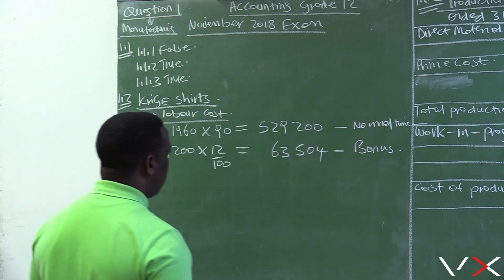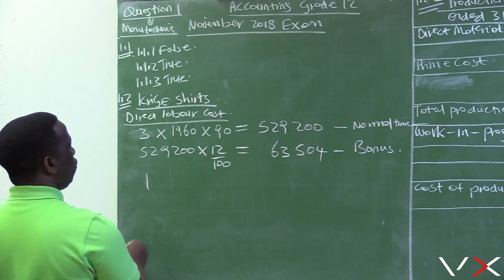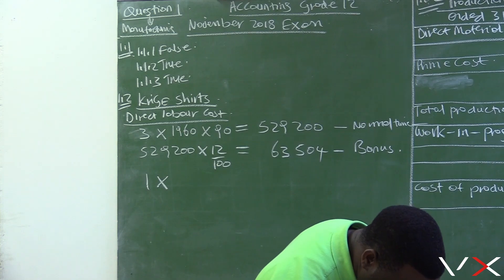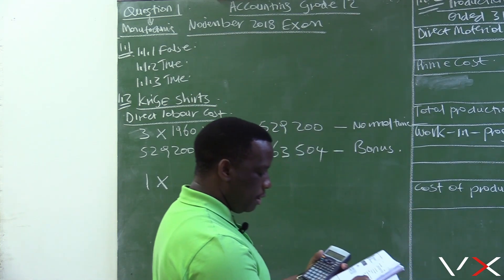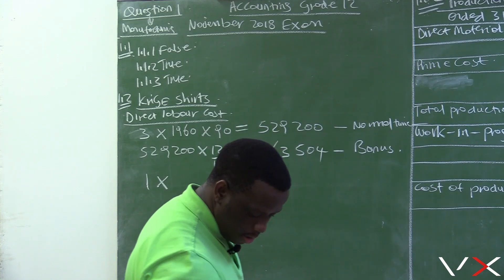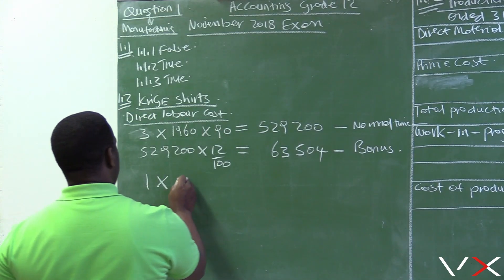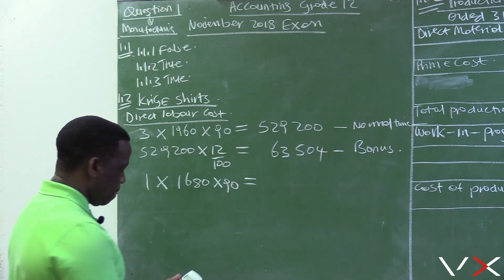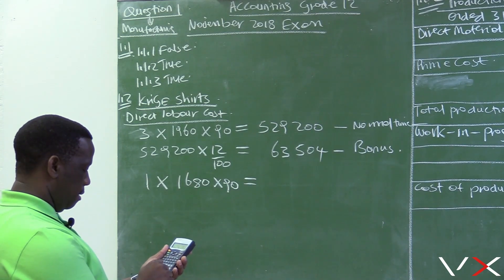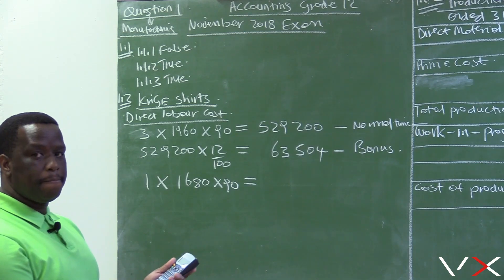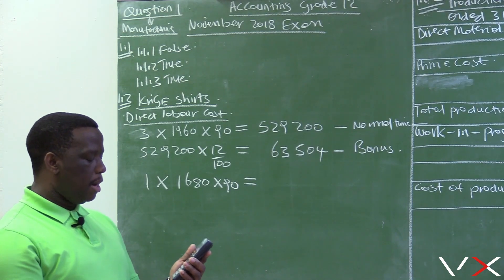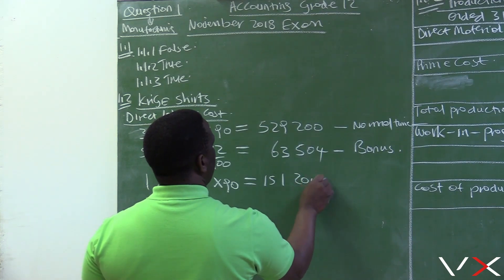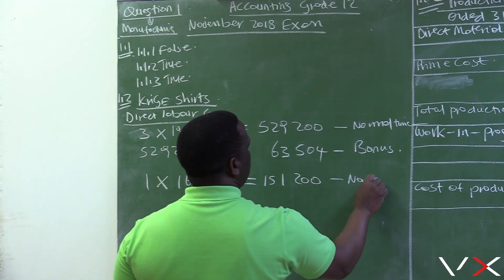We also calculate the normal time for the one worker who did not work the full hours. This worker worked only 1,680 hours at the normal rate of 90 rand per hour: 1 × 1,680 × 90 rand = 151,200. That is the normal time for this one worker.